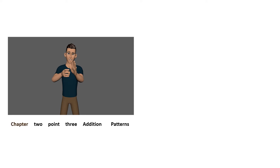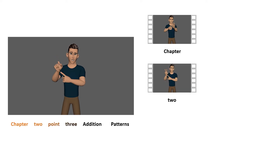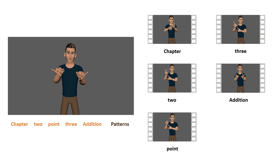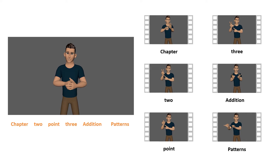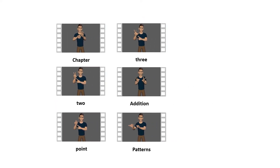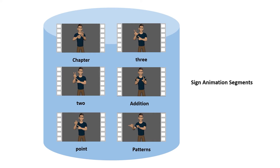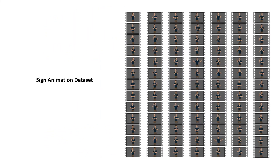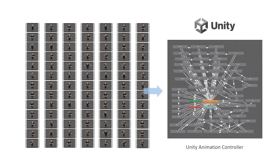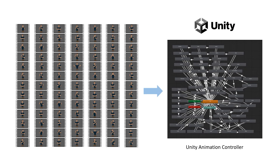As you can see from this example, we are able to cut corresponding sign segments for each certain word in a sentence from the SEE sign animation. After preparing these sign animation segments, they were then saved into the sign animation dataset and mapped into Animation Controller in Unity Game Engine, ready to be triggered.